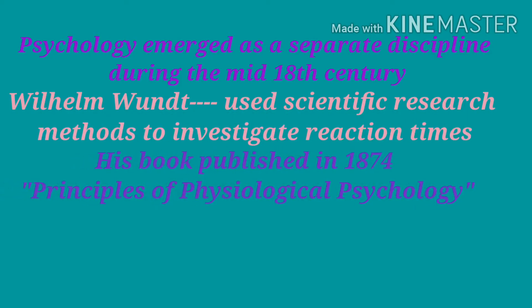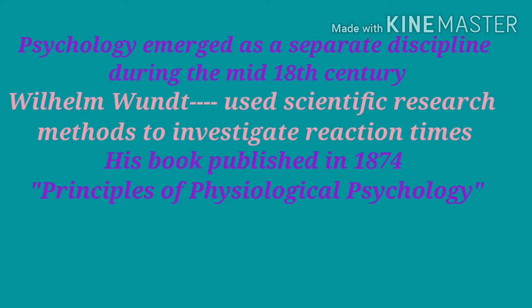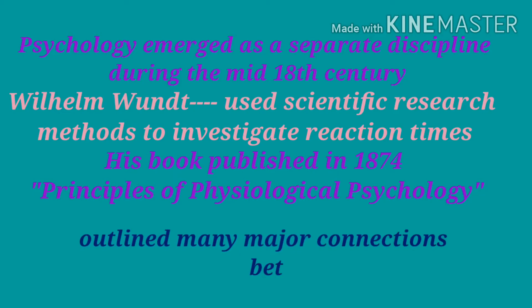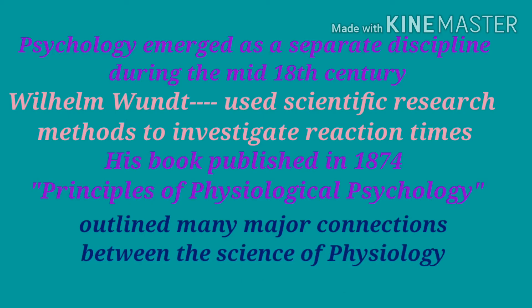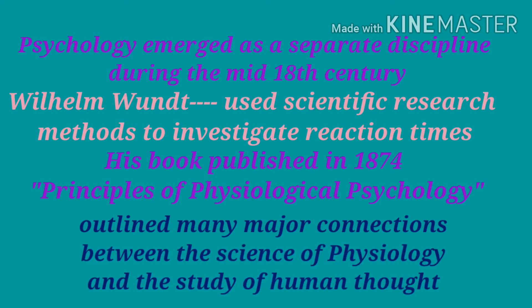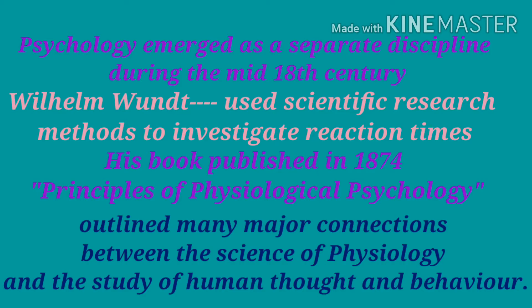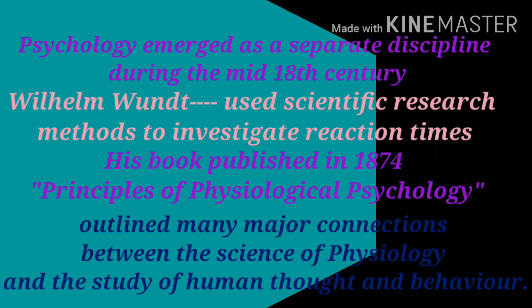Psychology emerged as a separate discipline during the mid-18th century when a German physiologist named Wilhelm Wundt used scientific research methods to investigate reaction times. His book published in 1874, that is, Principles of Physiological Psychology, outlined many of the major connections between the science of physiology and the study of human thought and behavior. He later opened the world's first psychology lab in 1879 at the University of Leipzig. This event is generally considered the official start of psychology as a separate and distinct scientific discipline.